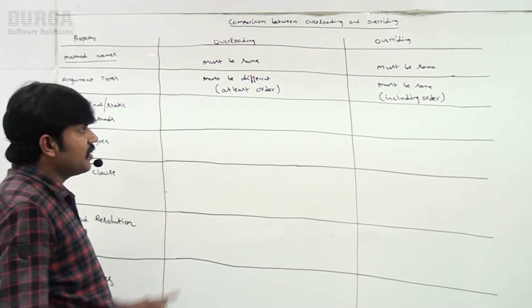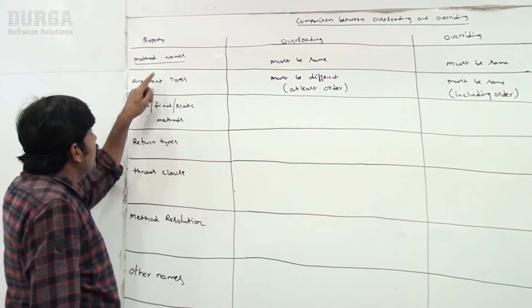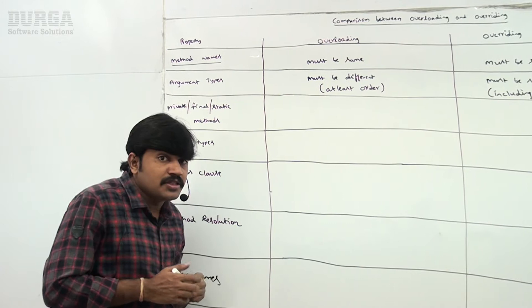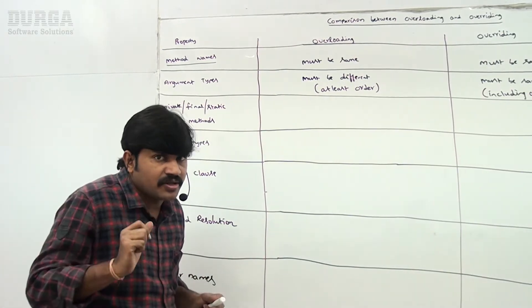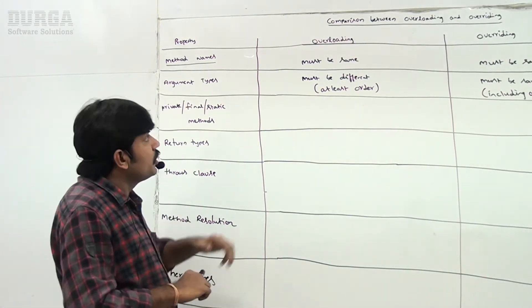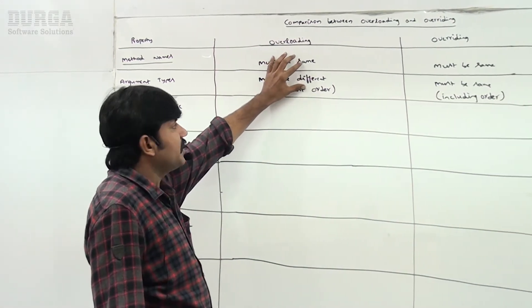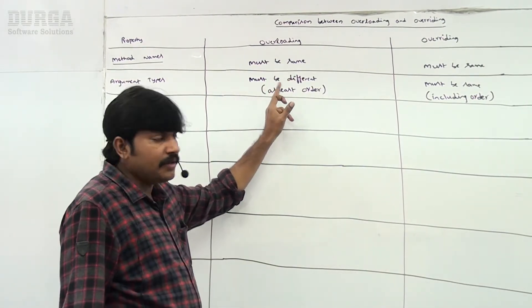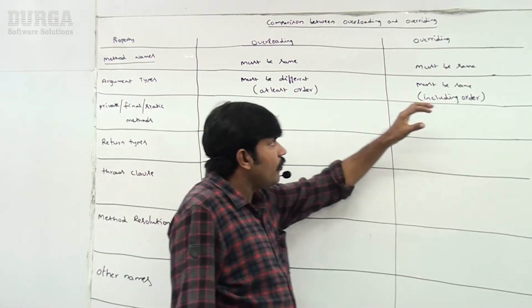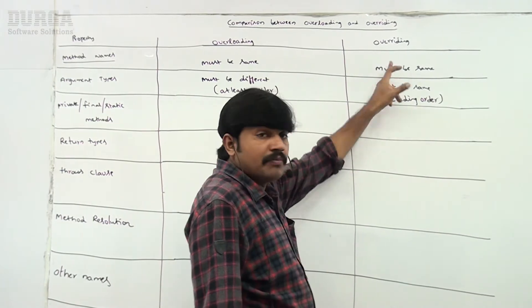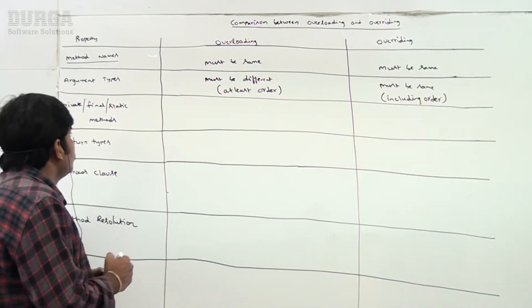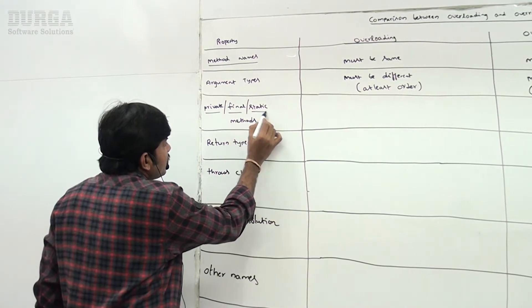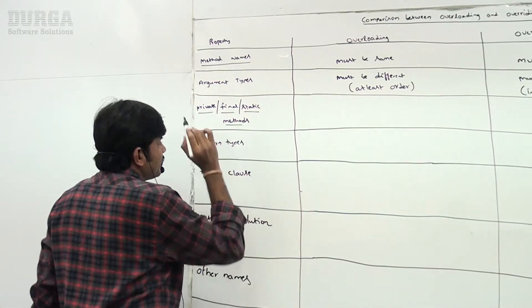Method names and argument types together are known as the method signature. In overloading, method signature must be different because argument types differ. But in overriding, method signature must be same.